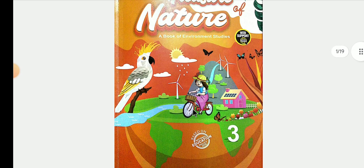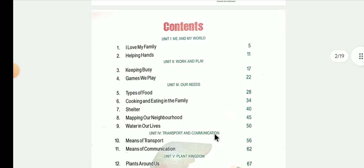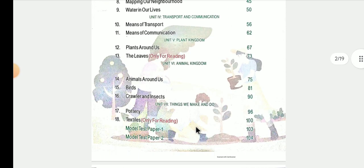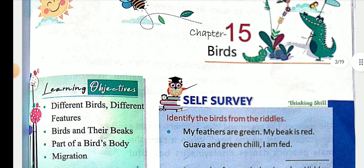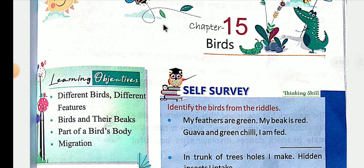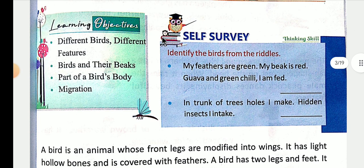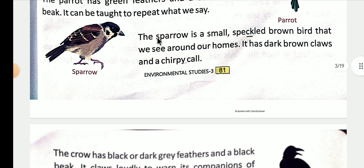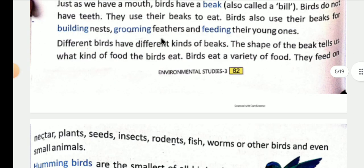Chalo, start karte hain chapter ko. This is the content list of this book. We have covered lessons up to 14, and one part of Lesson 15 is already uploaded on this channel, you can watch it there. Let's start Lesson 15, which is named 'Birds'. In this chapter, we are reading about birds — pakshiyon ke baare mein padh rahe hain.